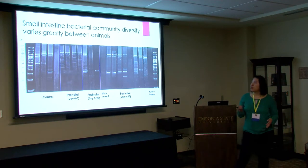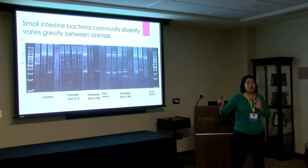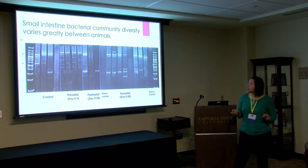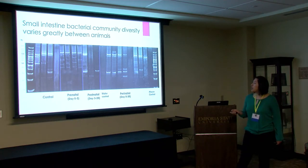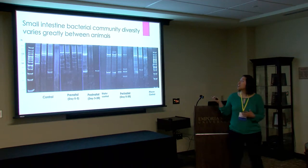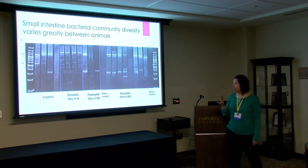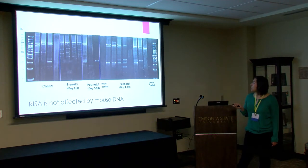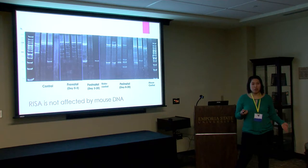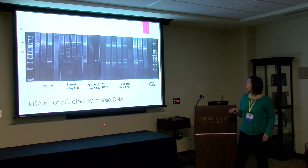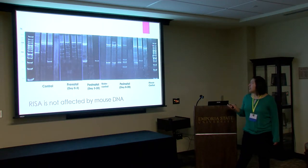The result of the gel shows that the banding pattern is really different within the groups, but especially between the groups. We can see the control, the prenatal group where interleukin-2 was blocked from day 0 to day 3, the postnatal group, and the perinatal group blocked from day 0 to day 20. We can say that the small intestine bacterial community diversity varies greatly between animals, since each well is one mouse sample. Also, running a mouse-DNA-only control that produced no bands confirms the assay is specific to bacterial DNA only.